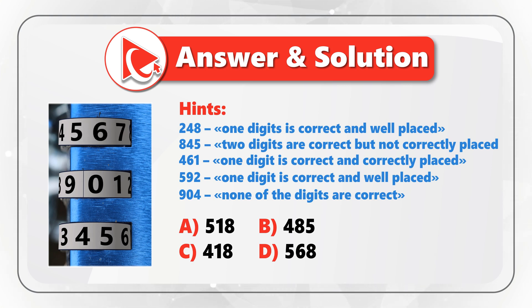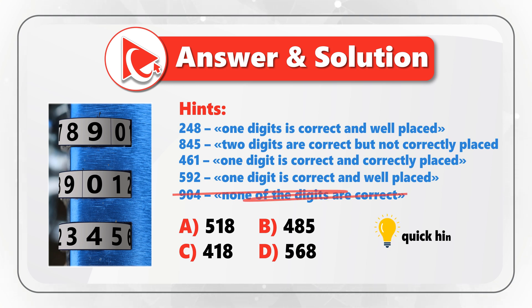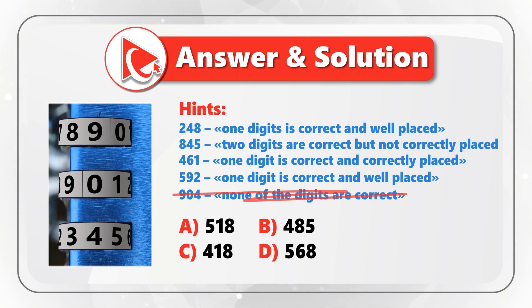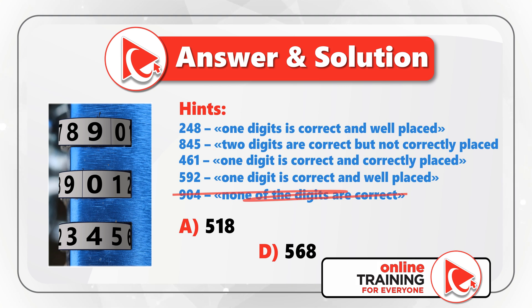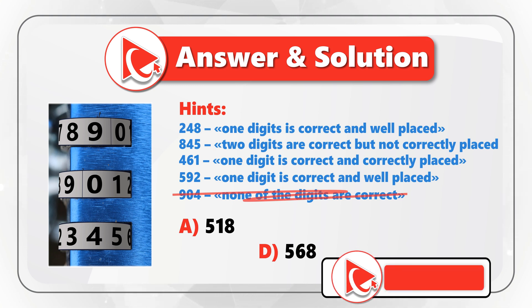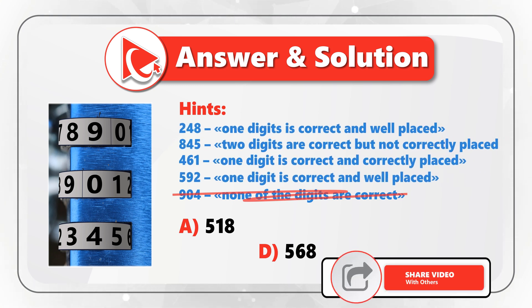Once we have learned that in combination 904 none of the digits are correct, we can eliminate two possible answers. We can eliminate both choices B and C, because both of them contain digit 4, which is an incorrect digit. Let's continue elimination to get to the correct answer.